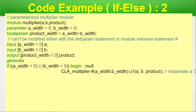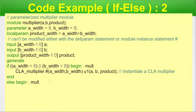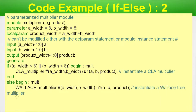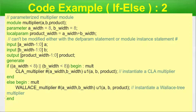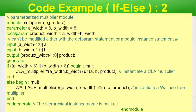Inside the if block named 'mult', a carry-lookahead (CLA) multiplier is instantiated with parameters a_width and b_width. The else branch also has a block named 'mult' — the same name is valid because it is a different scope (if-scope vs. else-scope). In the else block, a Wallace multiplier is instantiated. End-begin closes the else, end-generate closes the generate statement, and end-module closes the module.